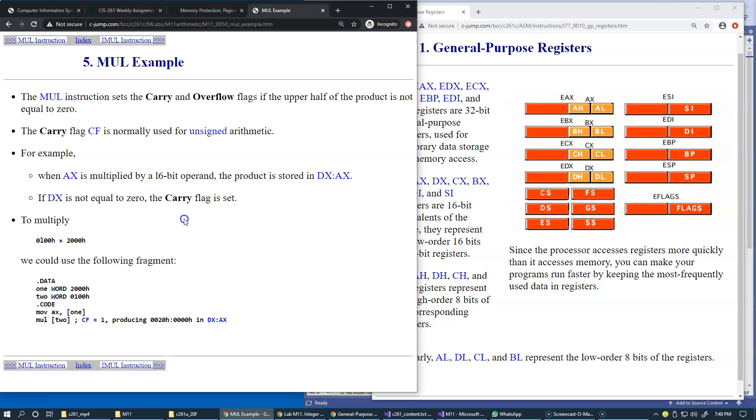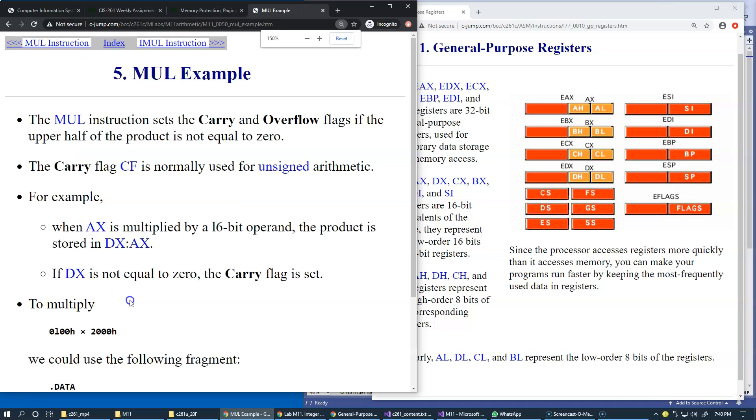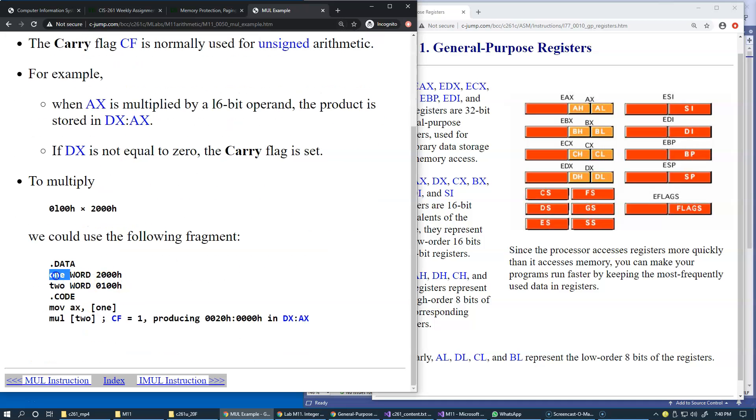To multiply 100 hexadecimal by 2,000 hexadecimal we could use this fragment. We have the data segment with two operands, both are word size, so these are 16-bit values in memory.